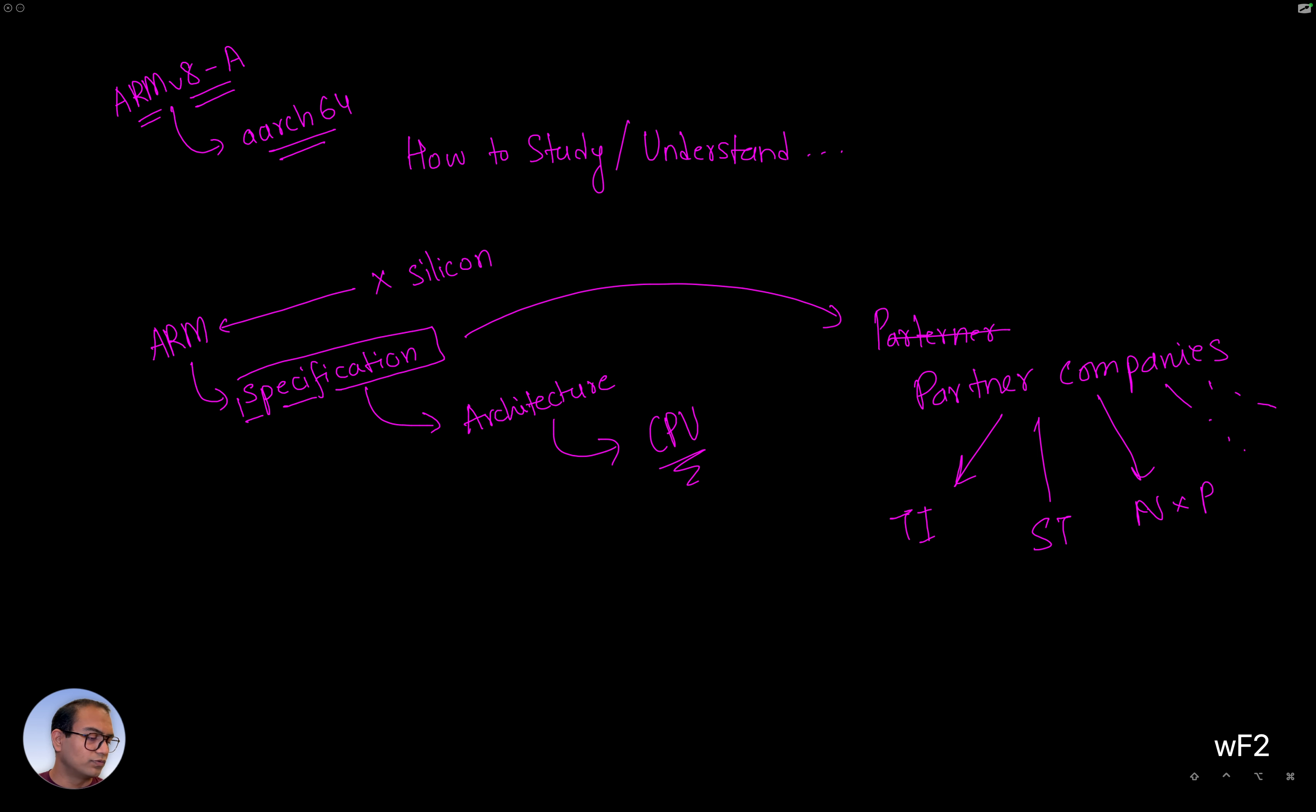These are the companies which take the specification and based on this specification, create a silicon chip, get it manufactured from foundries like TSMC, Samsung and so on. These are the ones that sell the chips in the market. And what ARM does is ARM takes a cut out of every chip that they sell, a royalty for taking their architecture and creating a chip out of it.